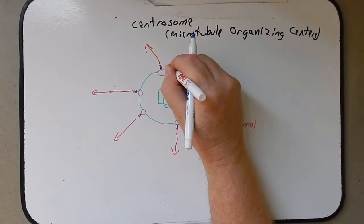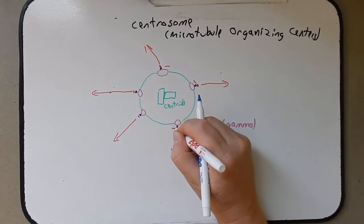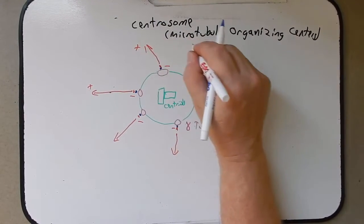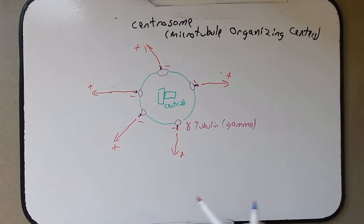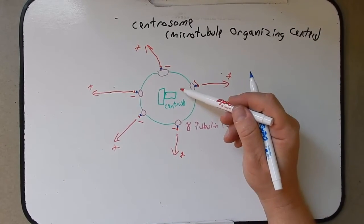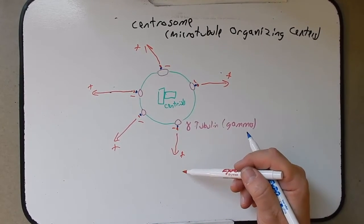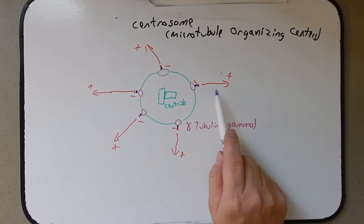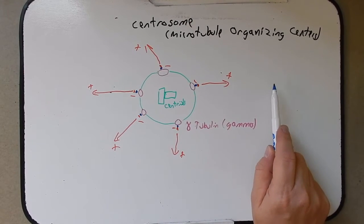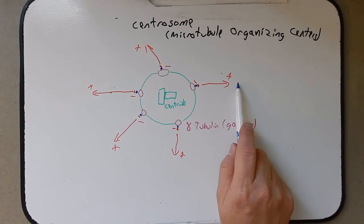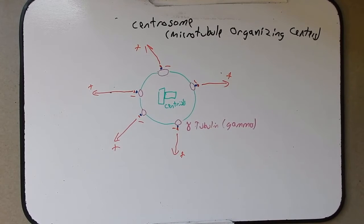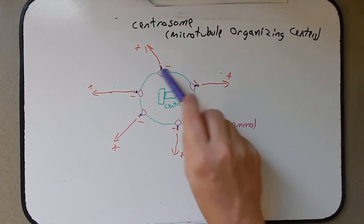Near the centriole is the minus end of the microtubule, and out toward the cell periphery is the plus end — growing toward the plus. Within the centriole there will be some back-and-forth growing and shrinking. In a practical sense, when it binds DNA and needs to pull that DNA towards itself, it will shrink. It grows toward the DNA, binds it, and before cell division is complete it brings that DNA back towards the centrosome.